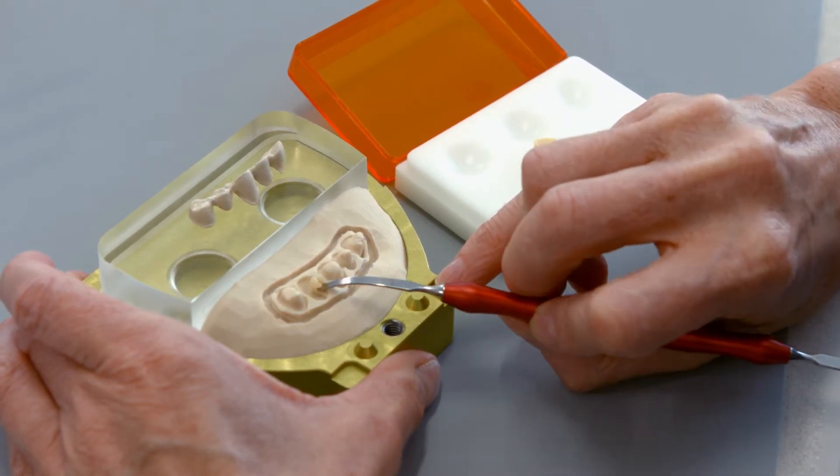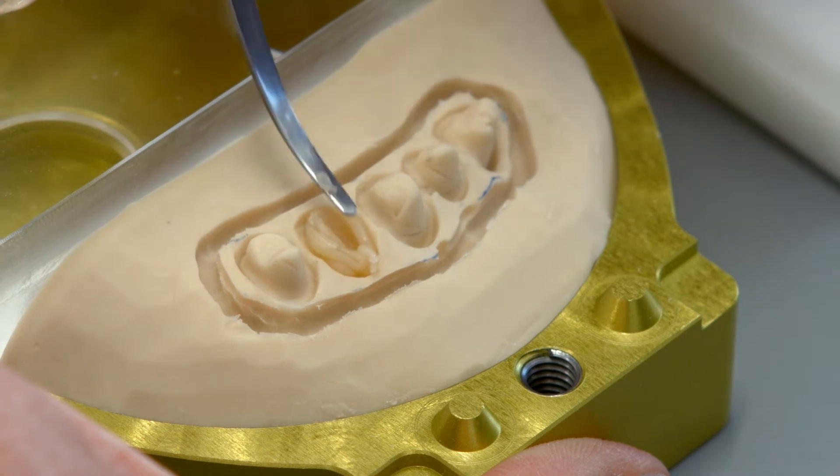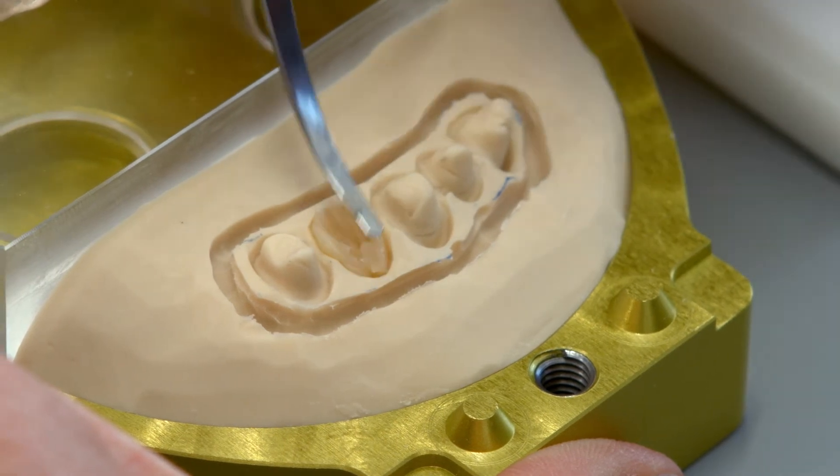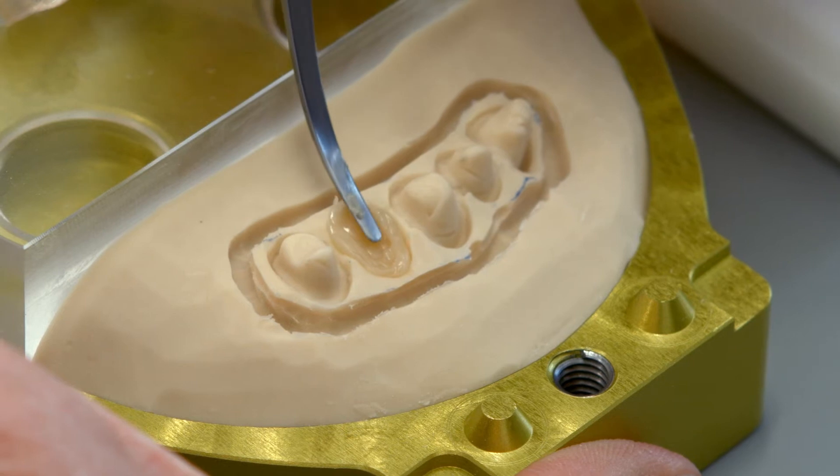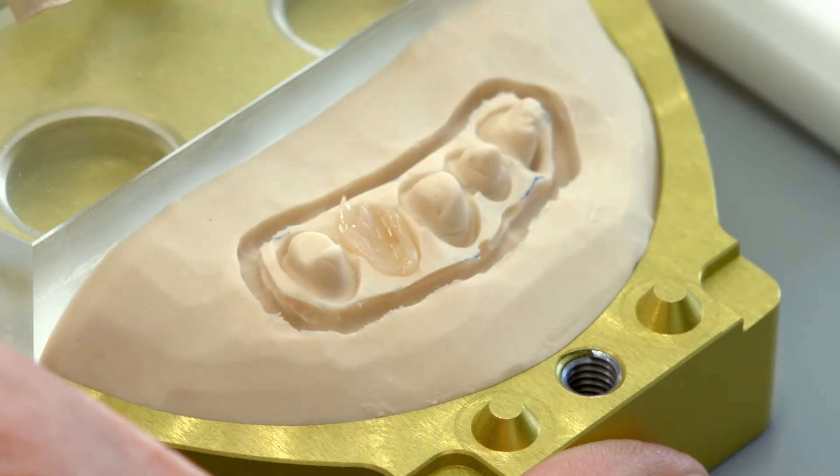Bridge pontics should be adequately filled with composite resin before they are placed. Dispense the resin without creating any bubbles or voids and distribute it evenly.